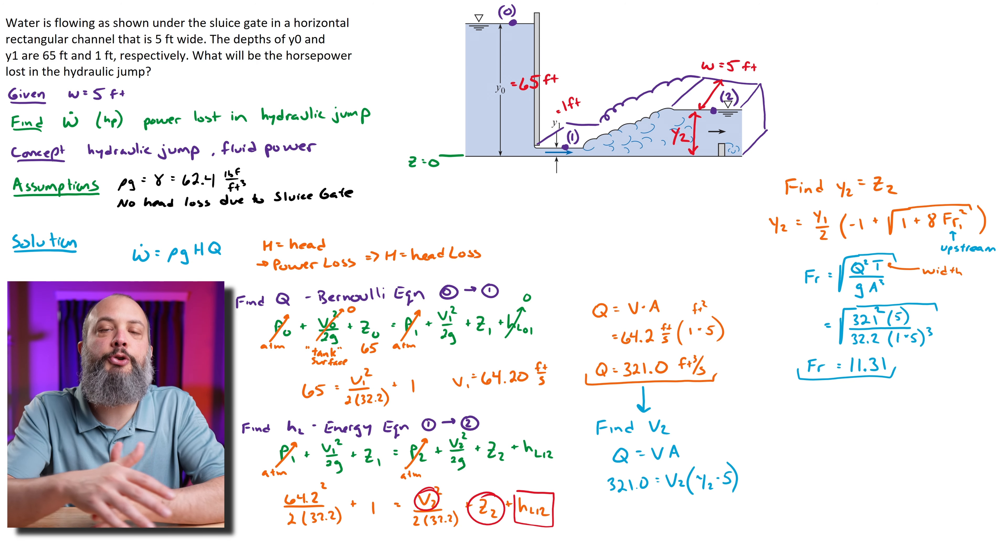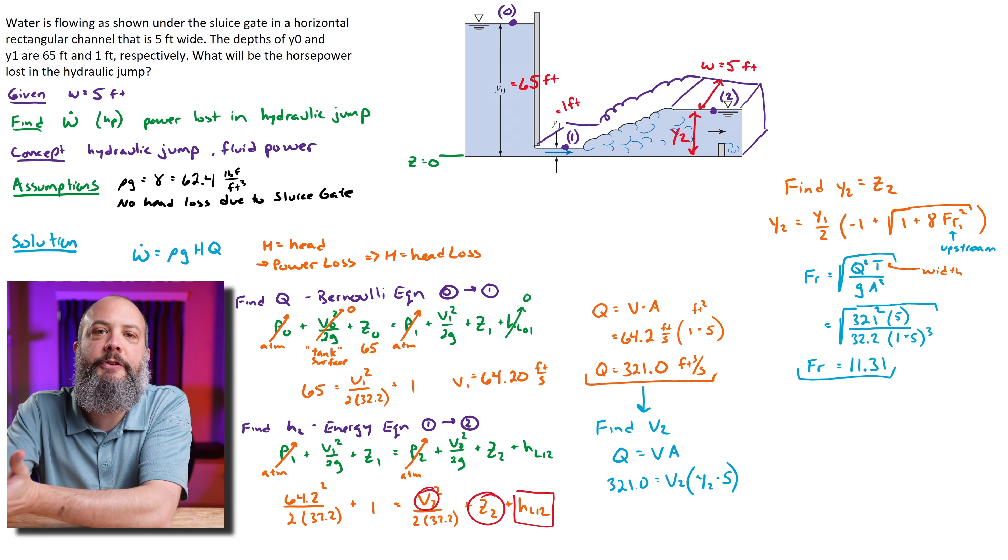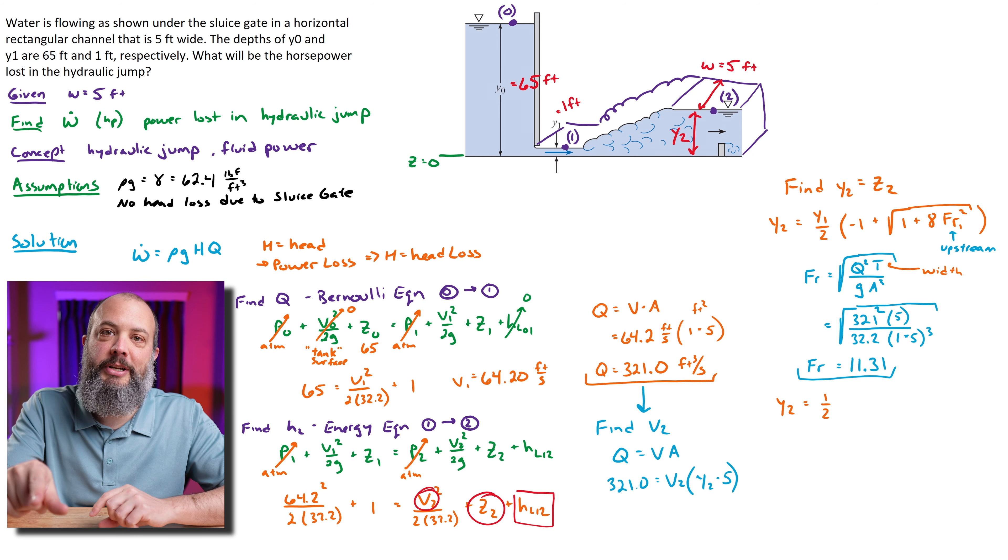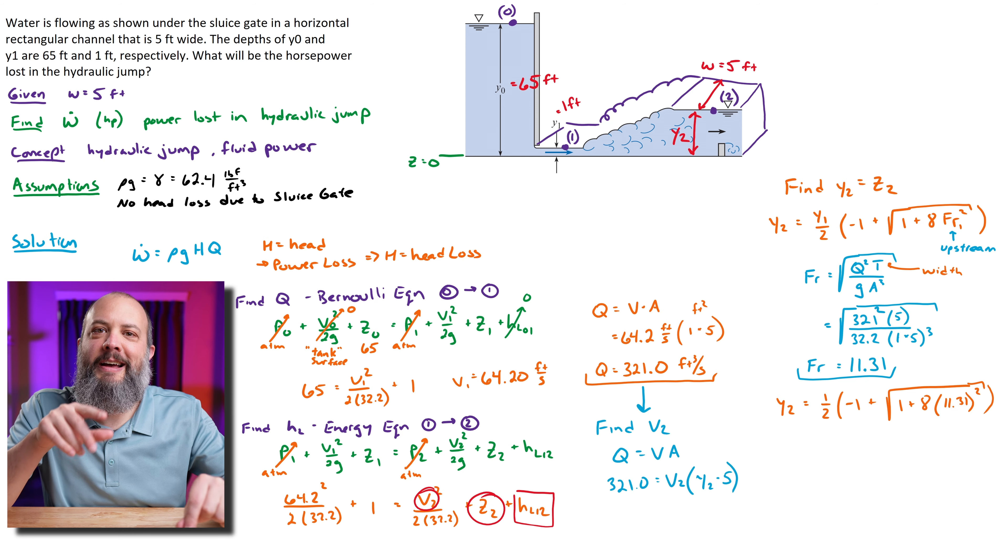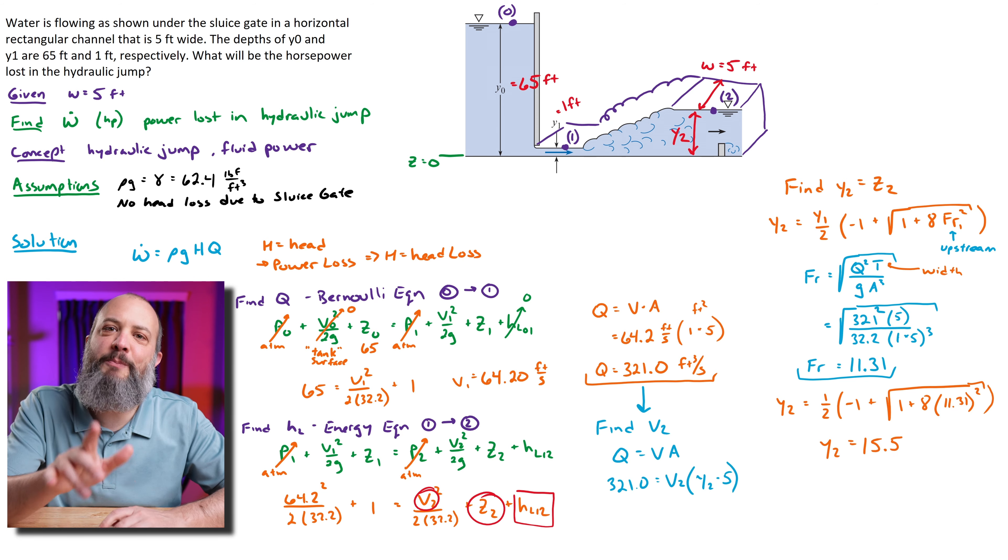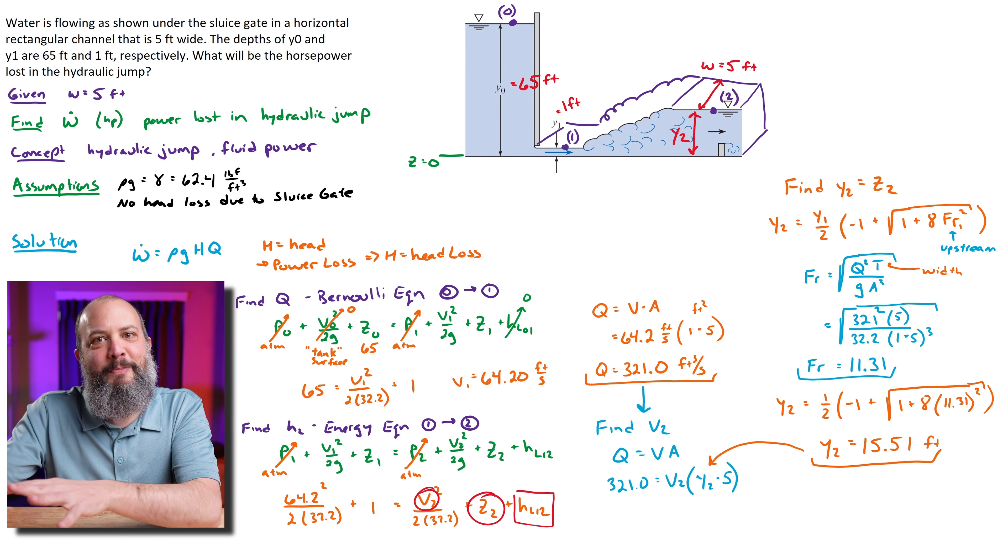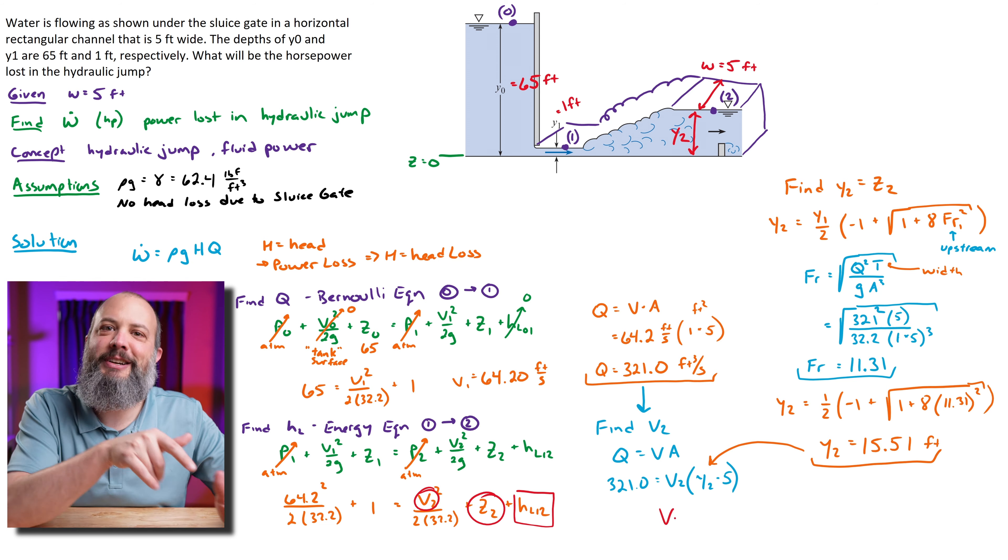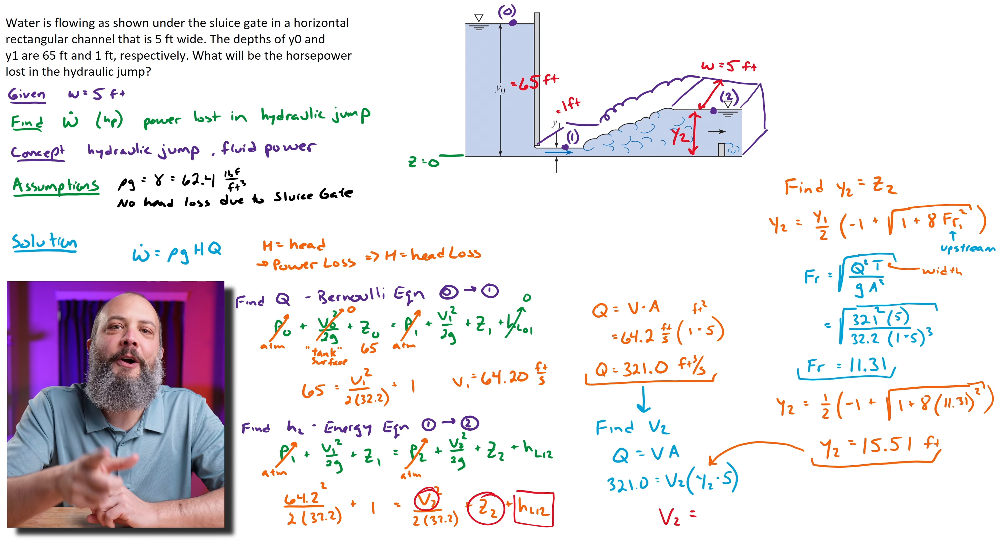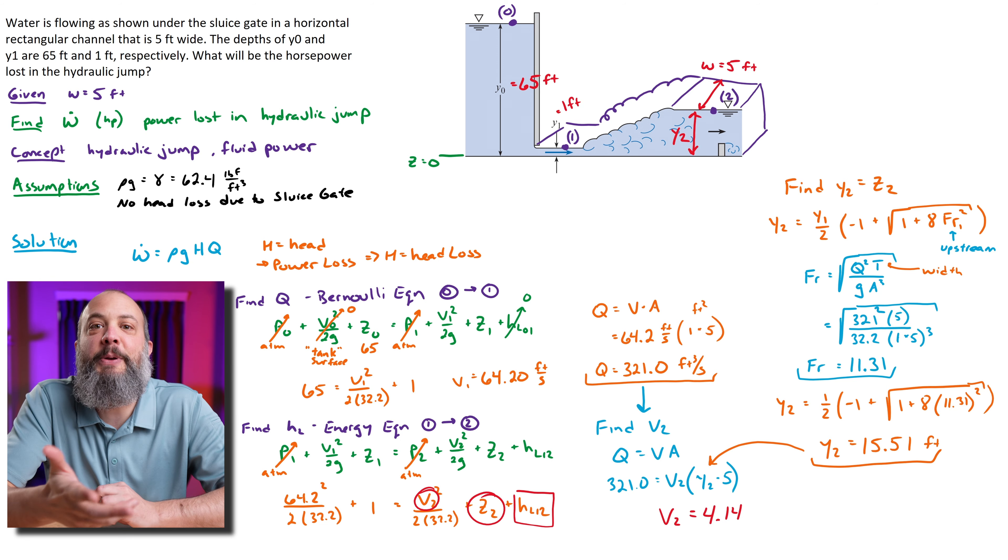Plug in those numbers, a little more calculator work—height 2 of 15.51 feet. Now we're digging our way back out of the hole. Plug this depth back into the continuity equation and we can get 4.14 feet per second as the speed at point 2.